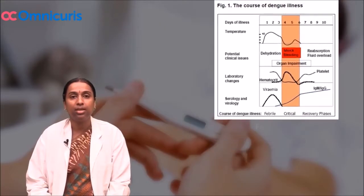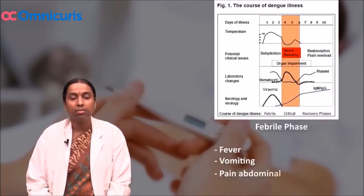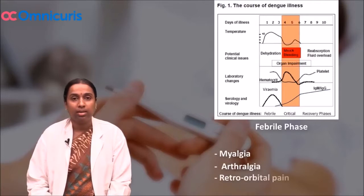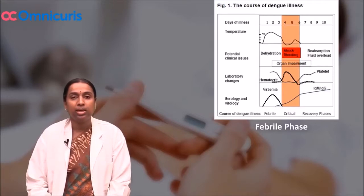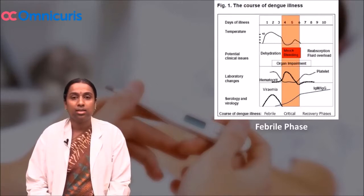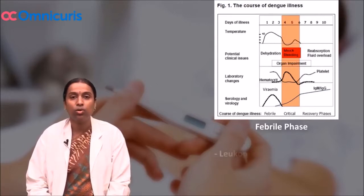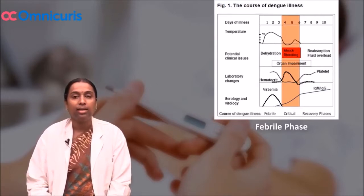During the febrile phase, the child may have fever, vomiting, pain abdomen, myalgia, arthralgia, and retroorbital pain. The clinical issues during this period are because of poor intake — the child may be prone to dehydration. Laboratory tests during this phase may reveal leukopenia and NS1 antigen may be positive.